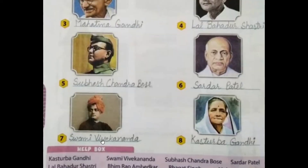The seventh one is Swami Vivekananda. His real name was Narendranath Datta. He was an Indian Hindu monk and was born on 12th January 1863.